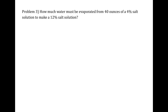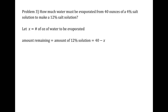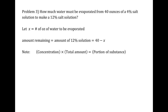As usual, we define our variable to be the unknown — in this case, x is the number of ounces of water to be evaporated. If we evaporate x ounces of water, the total amount remaining, which becomes the 12% solution, is 40 minus x. For this problem we use the equation: concentration times total amount equals portion of substance — this is just the percent equation: percent times whole equals part.